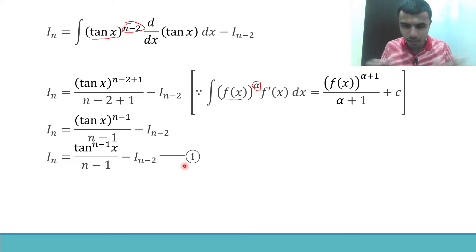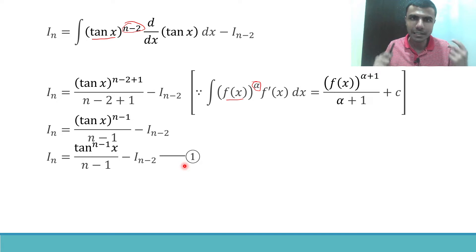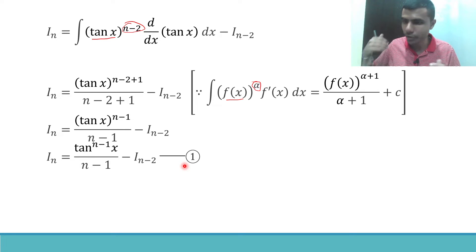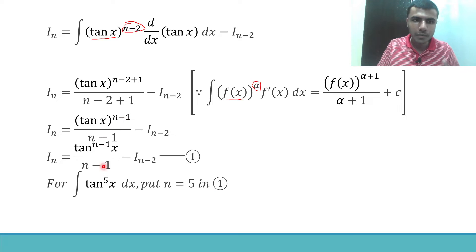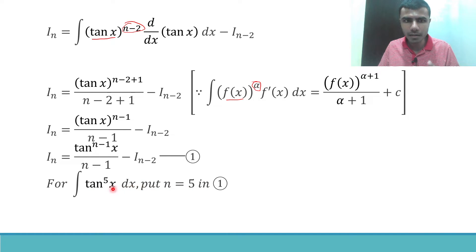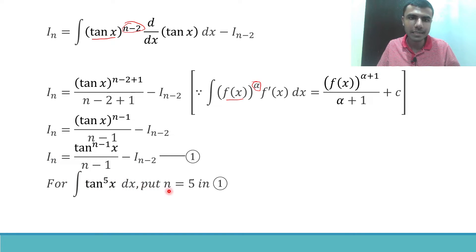For the integral of tan^5 x, we put n = 5 in the reduction formula. I_n means the integral of tan^n x dx, so for the integral of tan^5 x, I just put n = 5. Substituting n = 5 into the formula gives I_5 = tan^(5-1) x / (5-1) − I_(5-2).